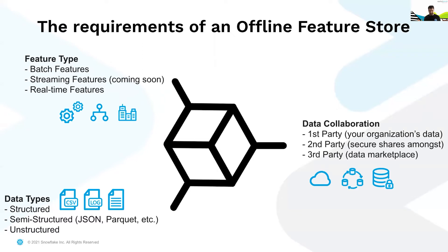So how does Snowflake fit into feature stores? Where we see ourselves today is really checking off a lot of the boxes of what an offline feature store should provide for you — and in addition, bringing our unique data sharing capabilities as well as our ability to store three types of data will expand what the true requirements for an offline store are. Today we see this in three different angles: one is by feature type. We can do batch features pretty well, along with batch aggregate features.